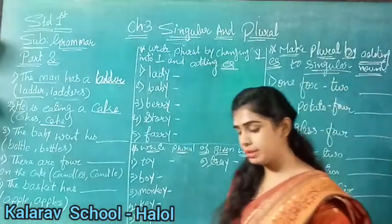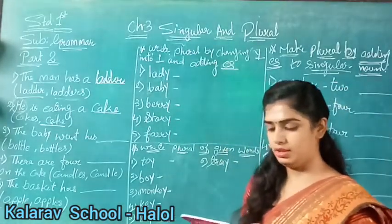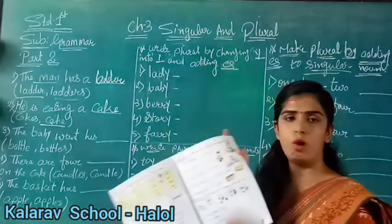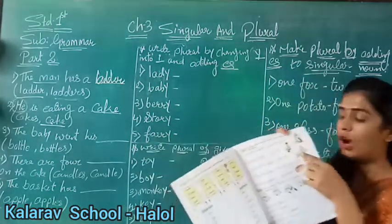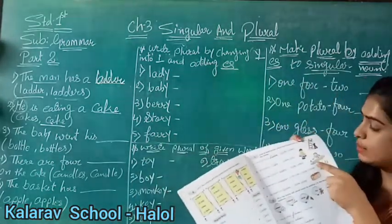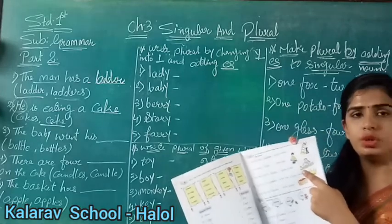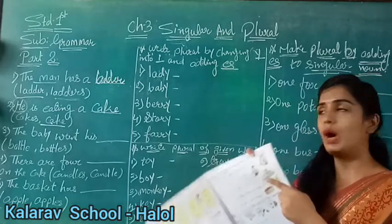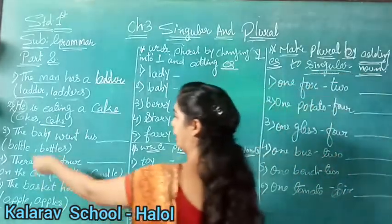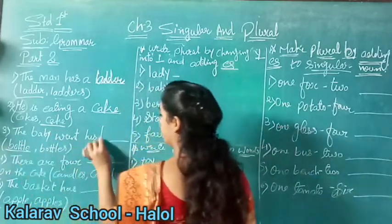Now third number is: 'The baby wants his bottle.' What will we write here - bottle or a bottle? See what the baby is doing - he is taking his bottle. Here, how many bottles are showing? One bottle. So the third answer is: the baby wants his bottle.